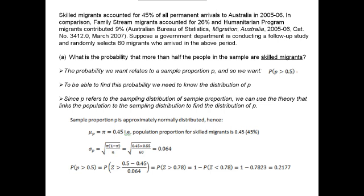Our first question, Part A, is: what is the probability that more than half of the people in the sample are skilled migrants? The probability we want relates to a sample proportion P, and specifically we want to find the probability that our sample proportion is greater than 0.5 — more than 50%, more than half.